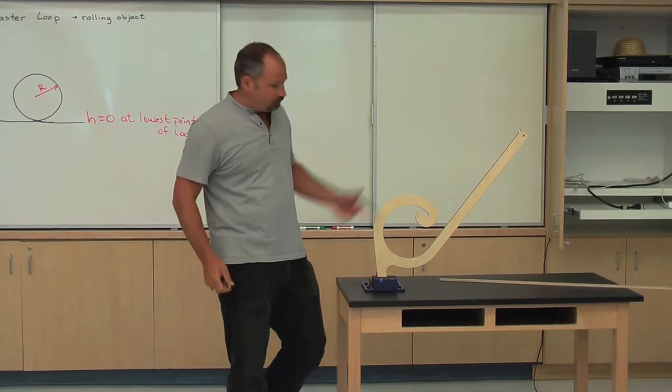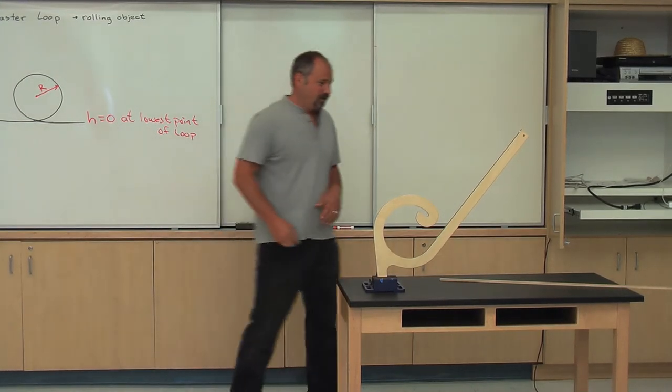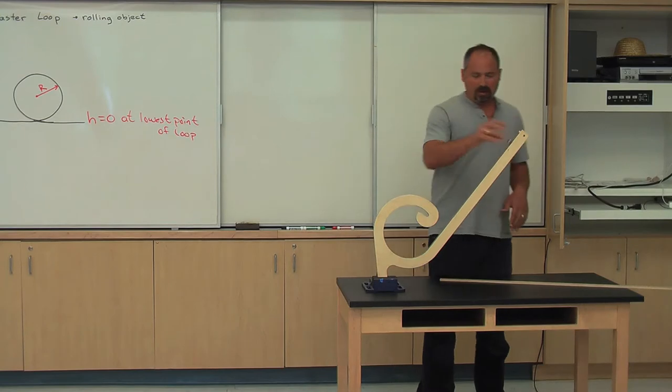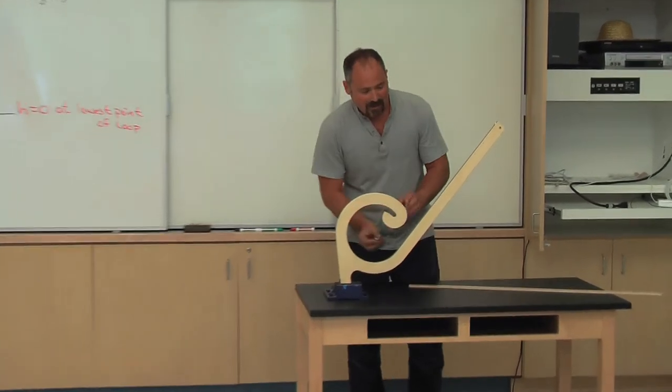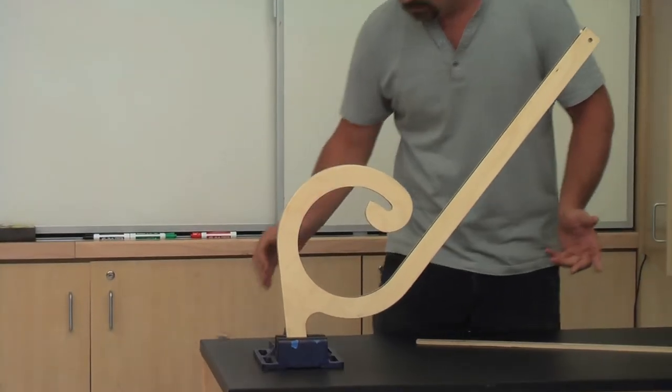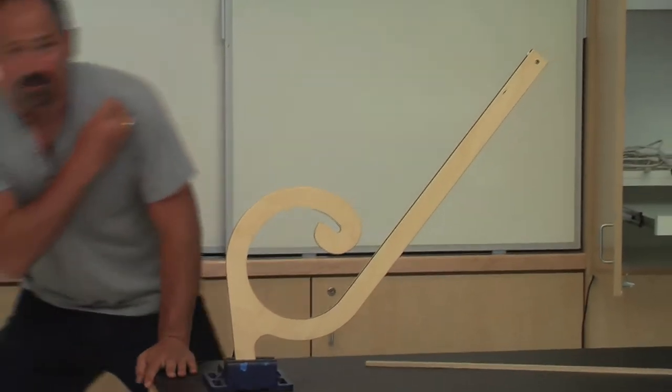So, here I have a ball which I'm going to send down the roller coaster. You'll notice if I put the ball up high, it goes down, it makes the loop, and everything's good and jolly. If I put the ball too low, it doesn't make the loop.